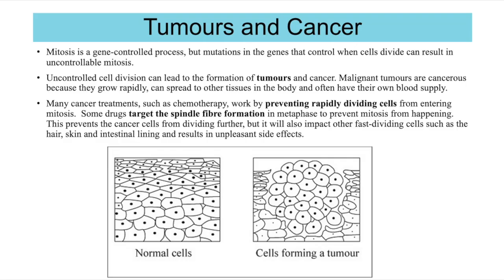Mitosis is a gene-controlled process. There are genes that produce proteins which initiate and control when mitosis stops, ensuring new cells are only replicated when the body needs them. However, mutations can occur in these genes that control mitosis. If a mutation occurs, the proteins meant to control when mitosis starts and stops may not function, resulting in uncontrolled mitosis.